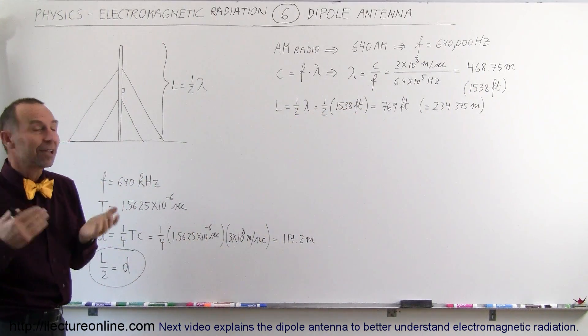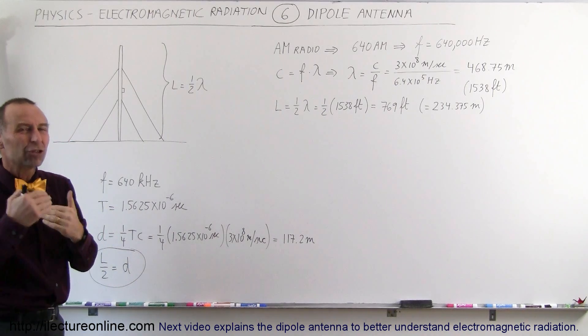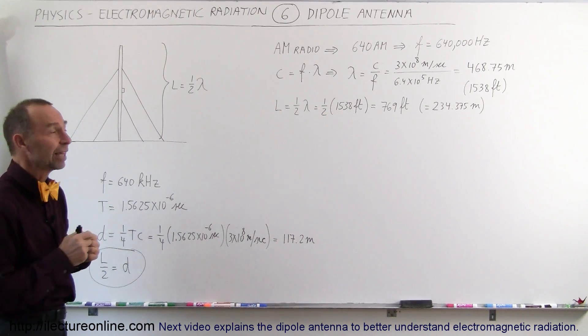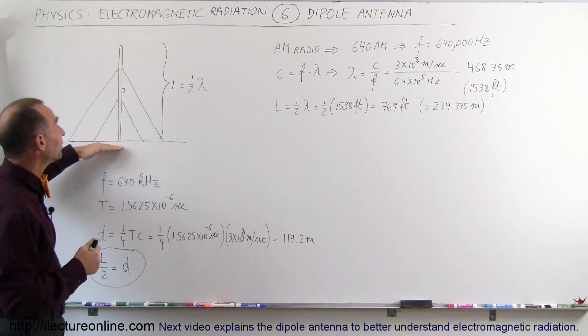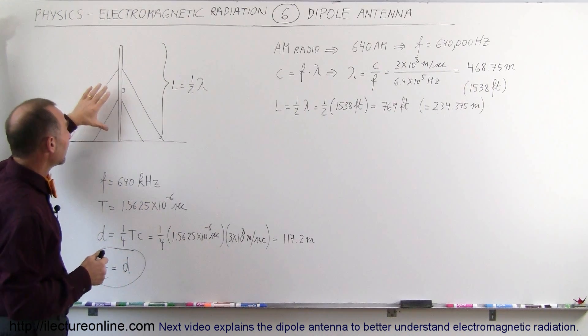Now, luckily, the length of that tower doesn't need to be equal to the wavelength. It's good enough to be equal to half the wavelength. It would be better the whole wavelength, but that would be a very big tower. Half the wavelength works just fine. We still get plenty of gain that way.